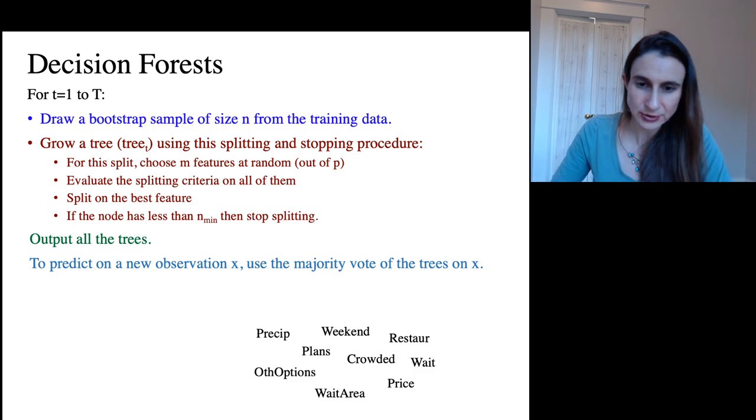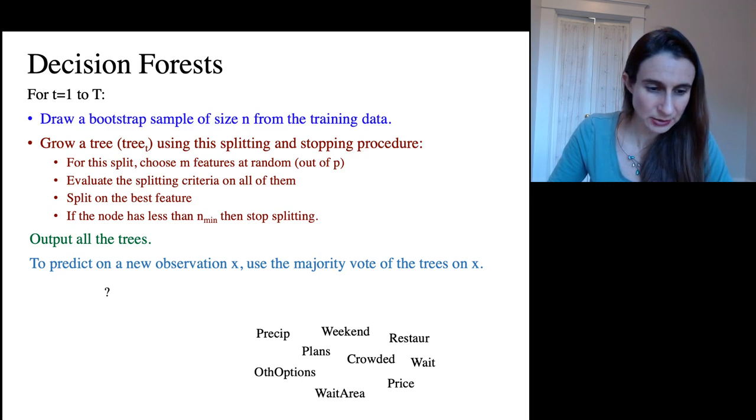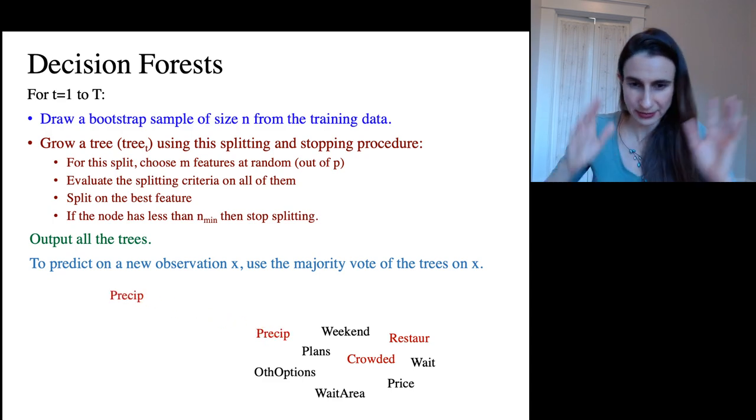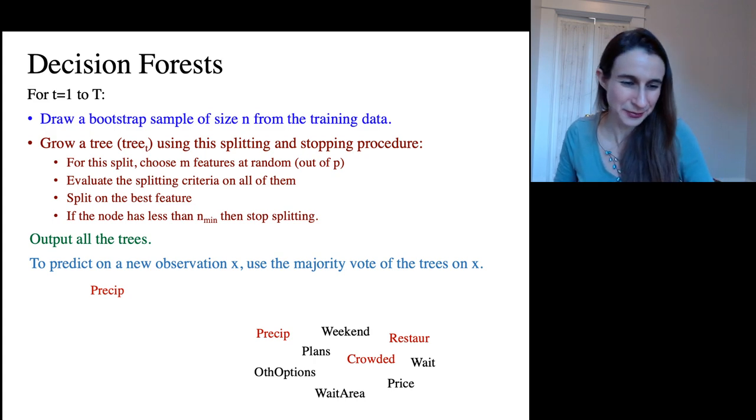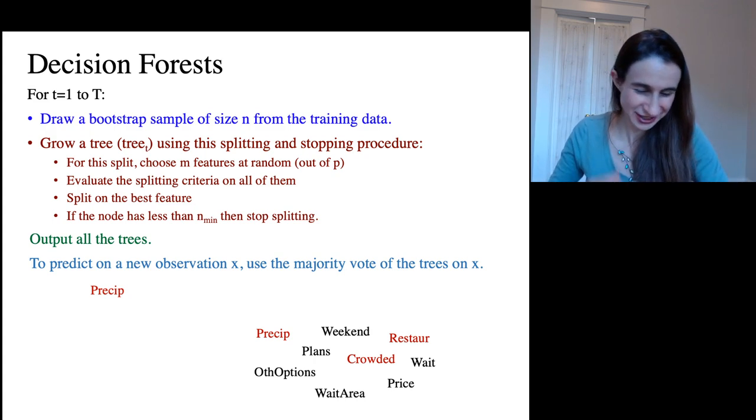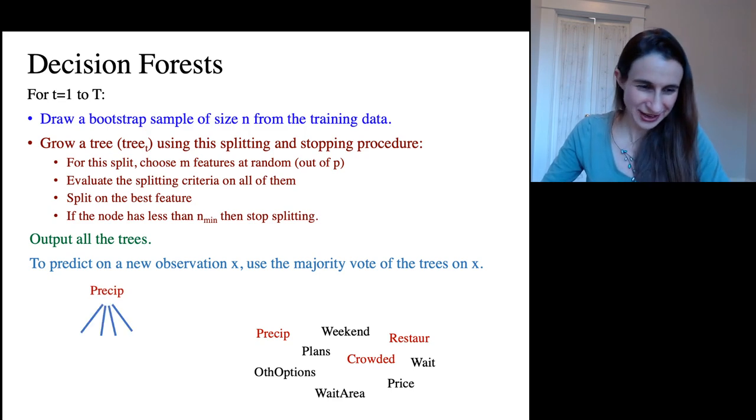So let's just do that again. There are our features from our restaurant example. We have our data and we're trying to figure out what to split on. And we choose just a subset of the features. We pick one of them. I didn't actually do the computation, I'm guilty of that. But let's say that it was precipitation and we put that feature at the top. We split on that.